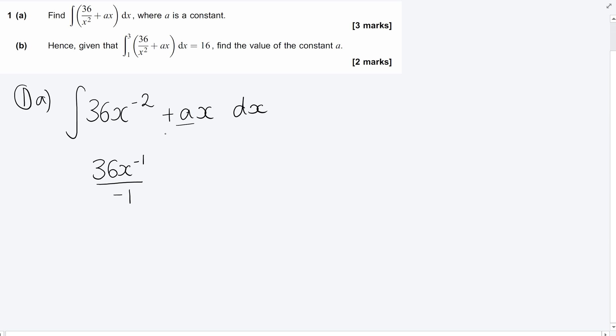So 36x to the power of minus one divided by minus one. And the a we know is a constant, so we are adding one onto the power of x there divided by the new power. So ax squared divided by the new power. And this is indefinite integration because we haven't got any limits, so we want to make sure we also have our plus c.